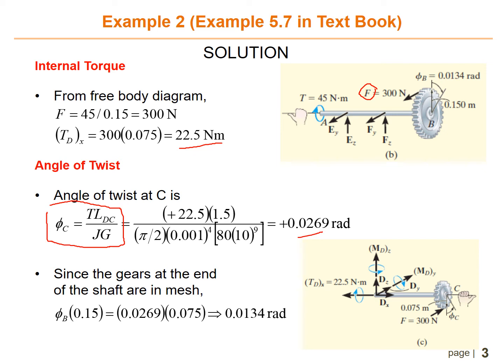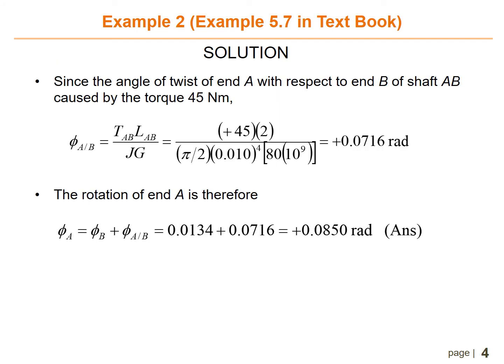Since the angle of twist of end A with respect to end B of shaft AB is caused by the torque 45 Newton meter, you need to find theta A/B, which equals T_AB times L_AB divided by JG. T_AB is 45 and the length is 2.